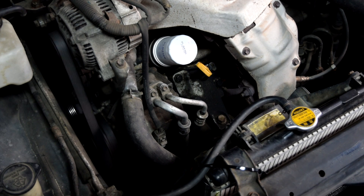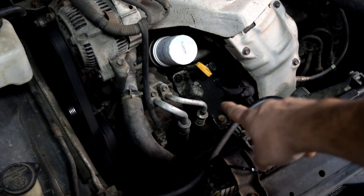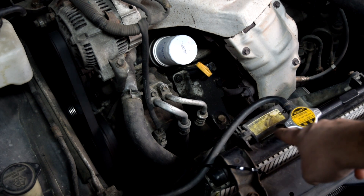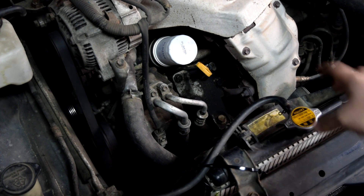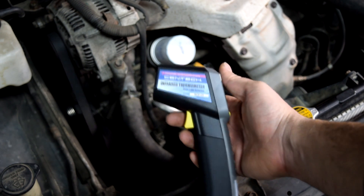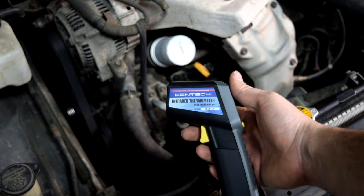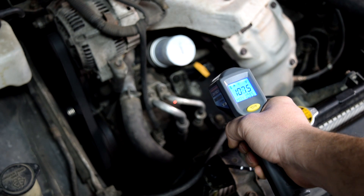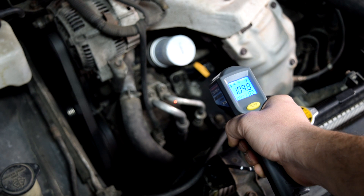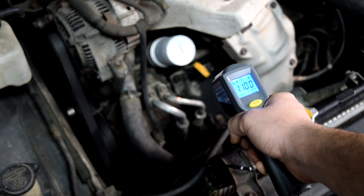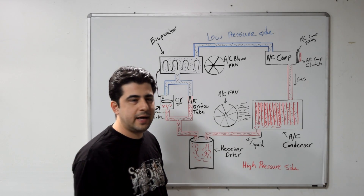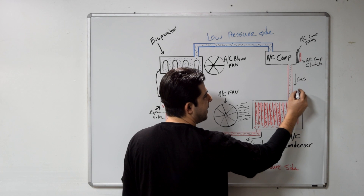After running the AC for a couple of minutes, on this car the line on the right is the high pressure side going to the AC condenser. I'm using an infrared thermometer so you can see the actual temperature. It reads about 105 to 110 degrees Fahrenheit, which is good — it means our compressor is doing its job and compressing the refrigerant.